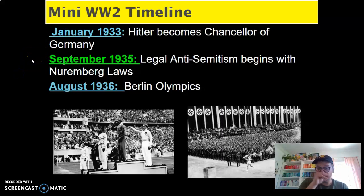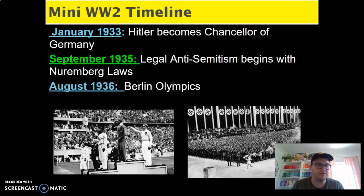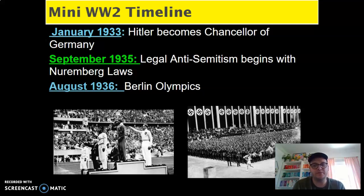So mini World War II timeline. In January of 1933, Hitler becomes the chancellor of Germany. It's an elected position, and so the people of Germany elected him into that position. It's almost similar to like a prime minister or vice presidential role — one step below the main leadership. But because of that position as chancellor, he's able to slowly take more and more power and eventually becomes the Führer, which is the leader of Germany.